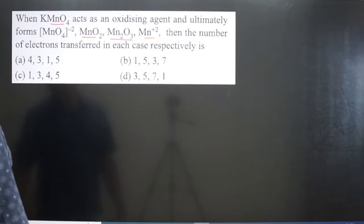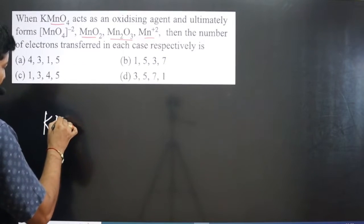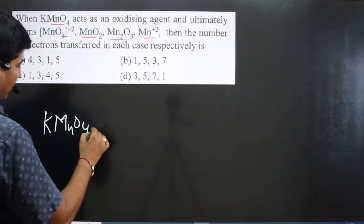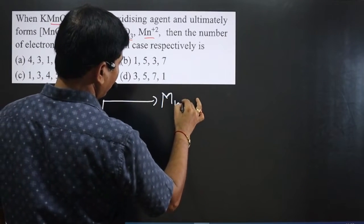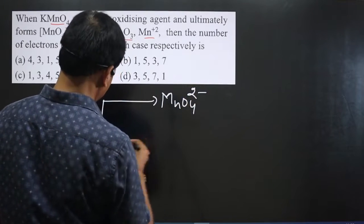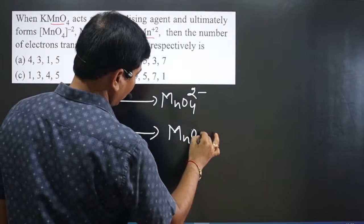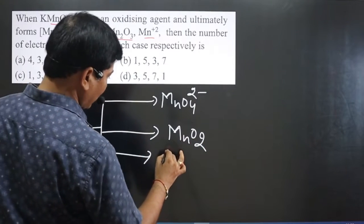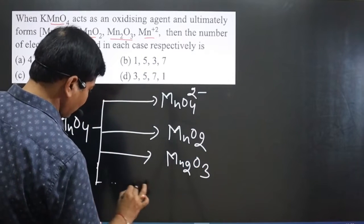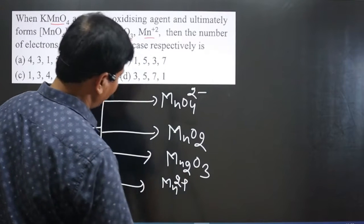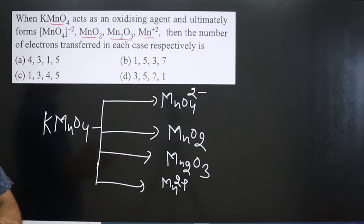Now follow the question. I can write this reaction. KMnO4 is there, converting into first MnO4^2-. Second, it is converting into MnO2. Next we have it converting into Mn2O3. And in the last it is converting into Mn^2+. In all these 4 cases we have to calculate the transfer of electrons.